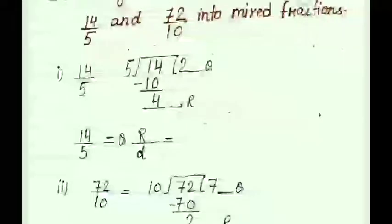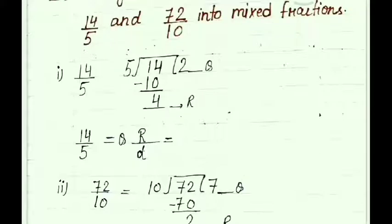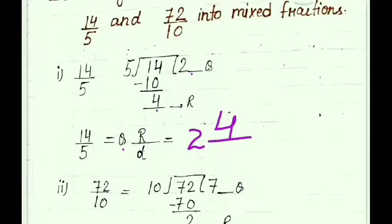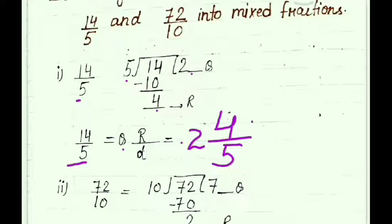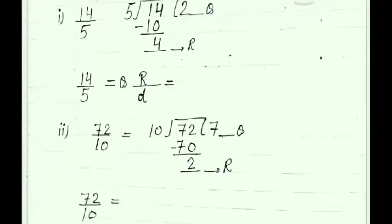Then 14 minus 10 leaves 4, and 5 into 4 is not divisible, so 4 is the remainder. The formula for converting improper fraction into mixed fraction is: quotient in whole, remainder upon divisor. So quotient is 2, write 2 as integral part, remainder is 4 as numerator, and divisor 5 as denominator.